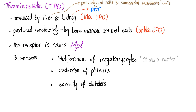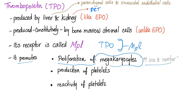T-Po's receptor is called MPL. When T-Po is going to work, it binds this receptor. T-Po promotes proliferation of megakaryocytes, increases their size and number, promotes production of platelets, and increases the reactivity of platelets — and this reactivity effect is unique to T-Po, not present with EPO.